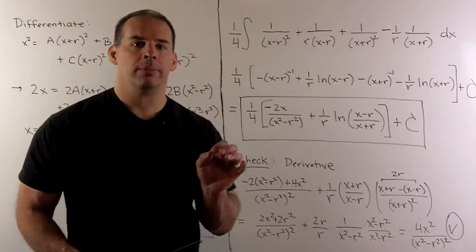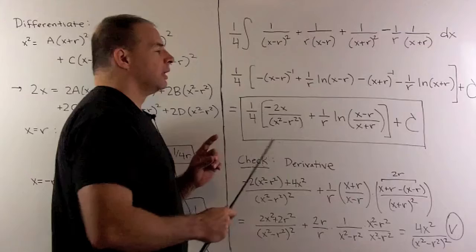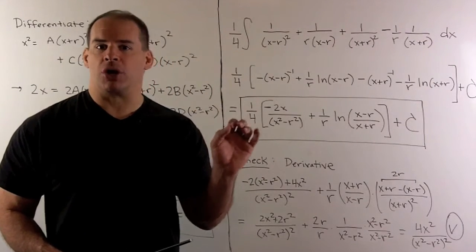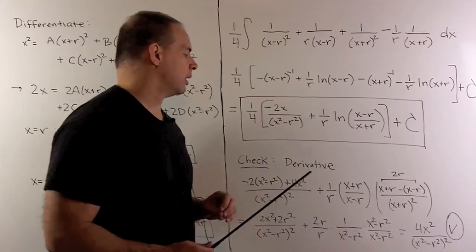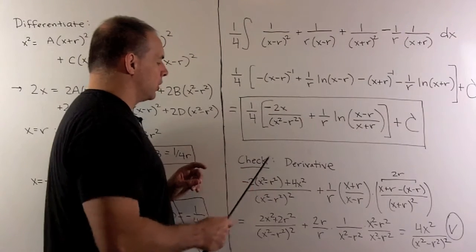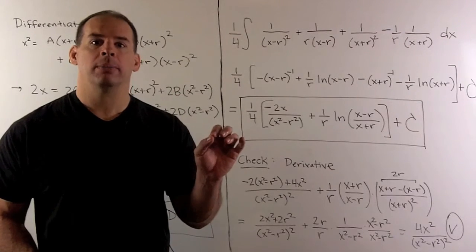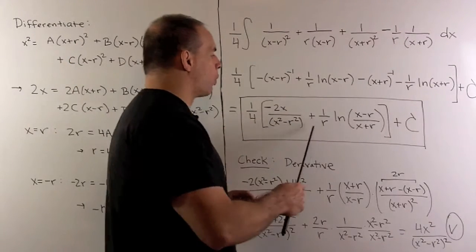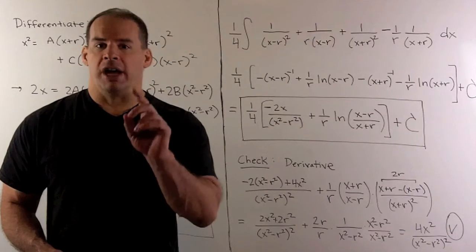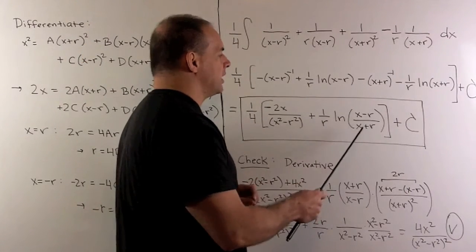Now, of course, we check our work. What we'll do is we're going to take the derivative of our antiderivative, and we better get what was in the integrand originally: x squared over x squared minus r squared, quantity squared. For the first part, this is just going to be quotient rule, so you can work that out. Remember your mnemonic: low d high less high d low over low squared. For this part, we're going to use chain rule with a logarithm. Remember chain rule: we're going to take derivative of the outside, evaluate it at the inside, and then take the derivative of the inside.